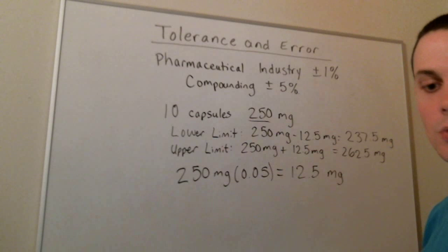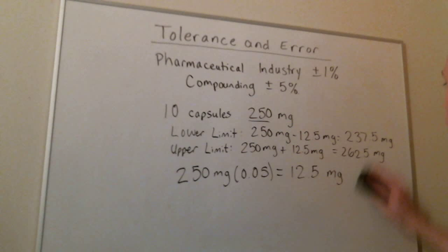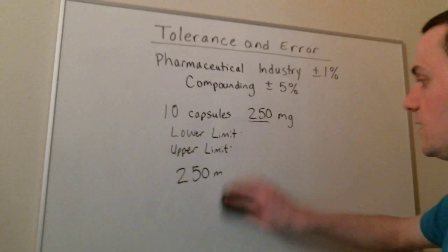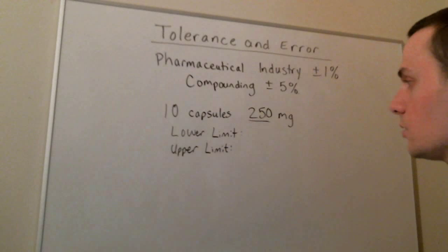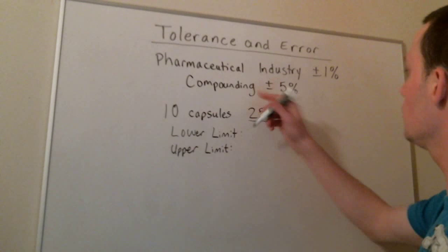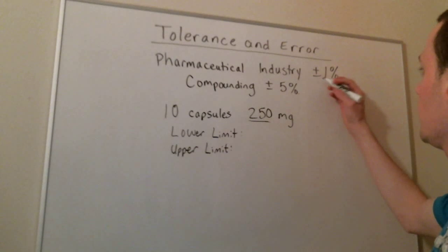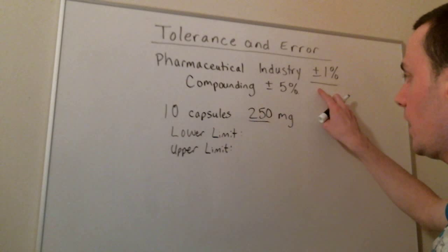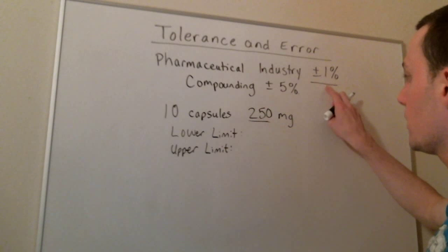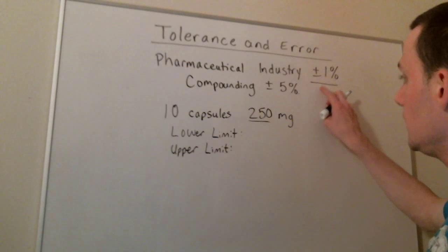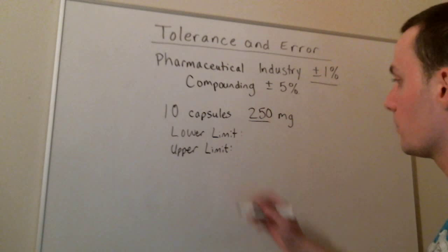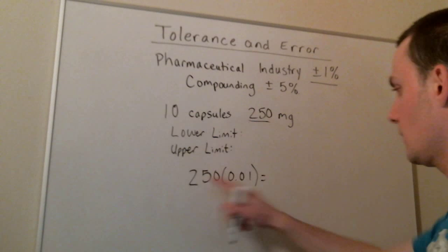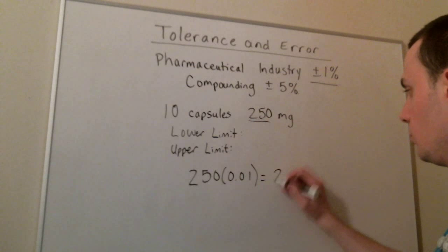Let's take this same example, but let's say that a major pharmaceutical company is making these capsules. A pharmaceutical company can have an error of plus or minus 1%. So to figure out what the maximum error is in milligrams, we take 250 and multiply it by 1%. 250 times 1% gives us 2.5 milligrams.